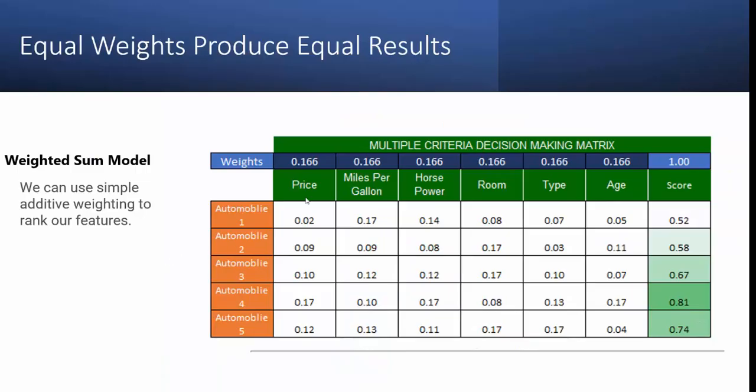Equal weights produce equal results. And what we're doing is using a weighted sum model. In that weighted sum, we can use simple additive weighting to rank our features. At the moment, we have not ranked our features, which gives us an equal value across each one of our features. This value is summed to one.